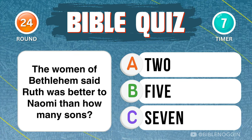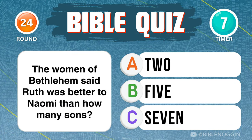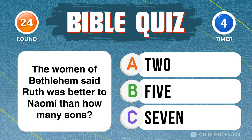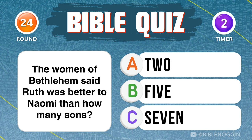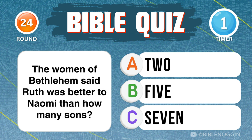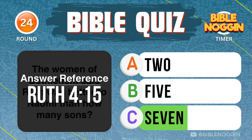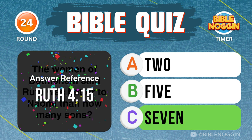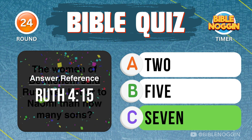Question 24: The women of Bethlehem said Ruth was better to Naomi than how many sons? Seven — found in Ruth chapter 4, verse 15.